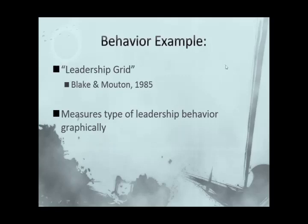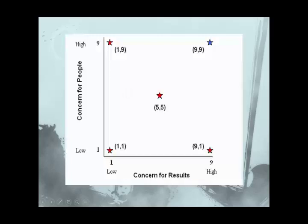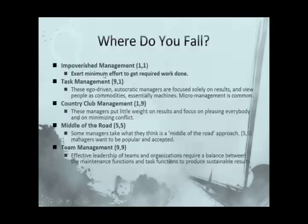If you take an amalgamation of those two things and literally start to graphically represent it, the way Blake and Mouton did in the 1980s, this is what you come up with. The concern for results relates to task orientation, and the concern for people relates to the whole idea of relationship. So if you're low on the task and low on your concern for people, this is where you'd be. You have different typologies associated with these graphic representations.